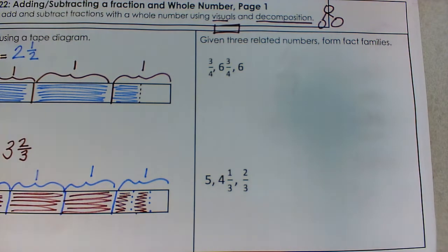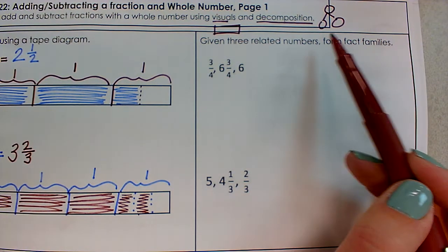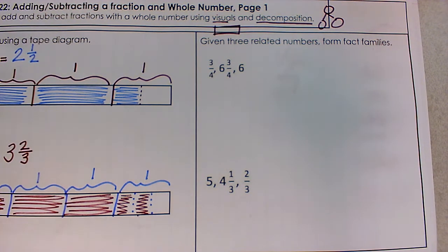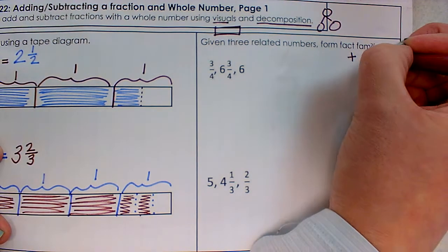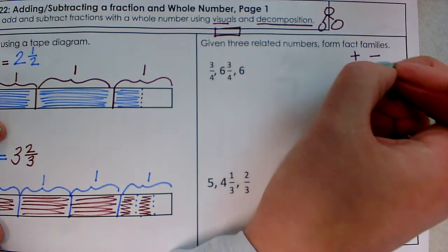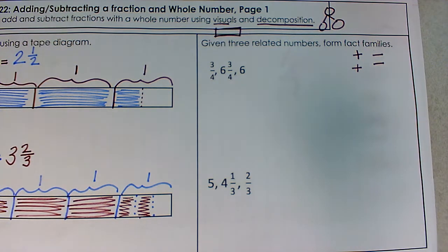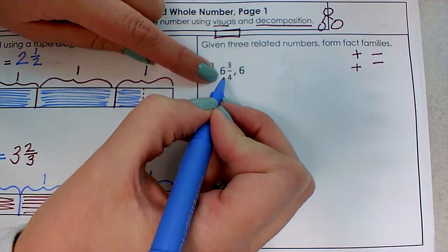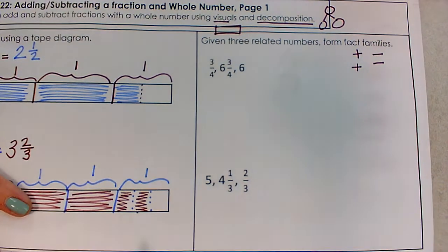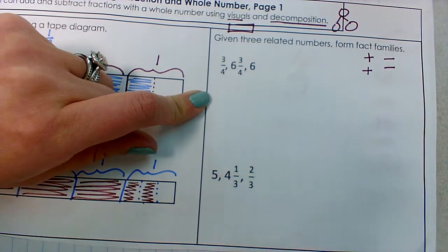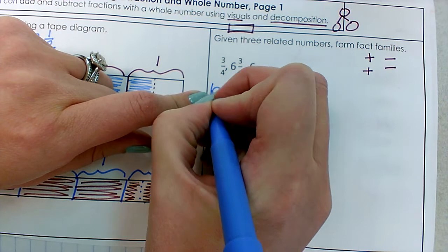Now we're going to switch gears a little bit. Our directions say: given three related numbers, form a fact family. A fact family has related operations, and the operations we're focusing on today are addition and subtraction. When I make a fact family, I can use two addition sentences and two subtraction sentences. This first one gives me three numbers, and when I make a number sentence I can only use those numbers — I can't pull any numbers from anywhere else.